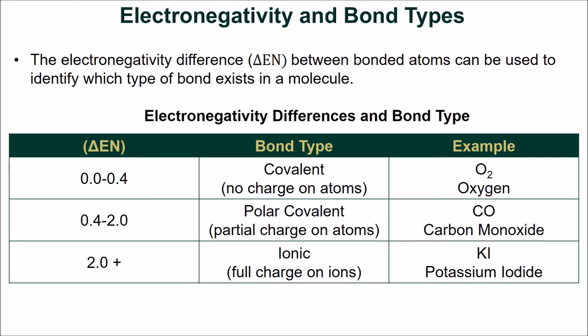The electronegativity difference between bonded atoms can be used to identify which type of bond exists in a molecule. A purely covalent bond, where electrons are shared equally, will have no charge on the bonded atoms and an electronegativity difference of 0 to 0.4 delta En. A polar covalent bond, where electrons are shared unequally, will have a partial charge and an electronegativity difference of 0.4 to 2.0 delta En. An ionic bond, where electrons are transferred, will have a full charge on the bonded ions and an electronegativity difference greater than 2.0 delta En.